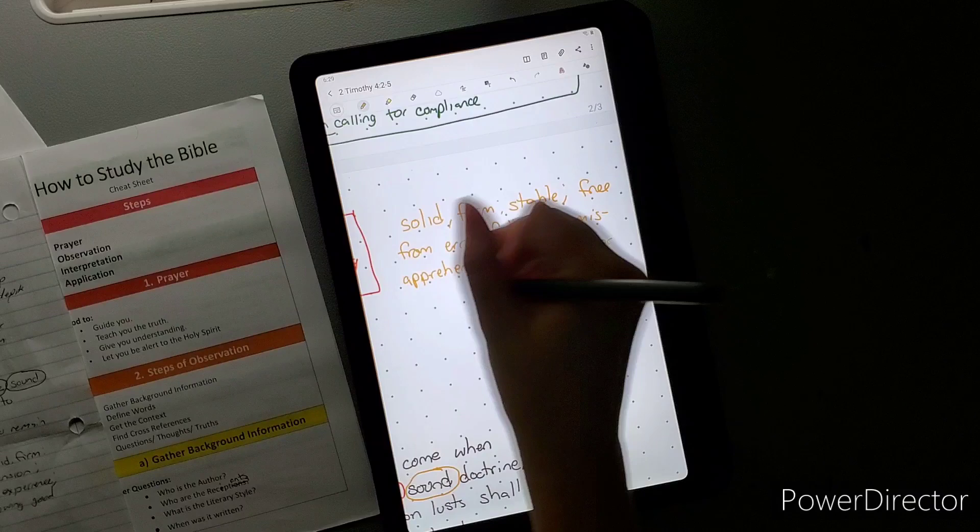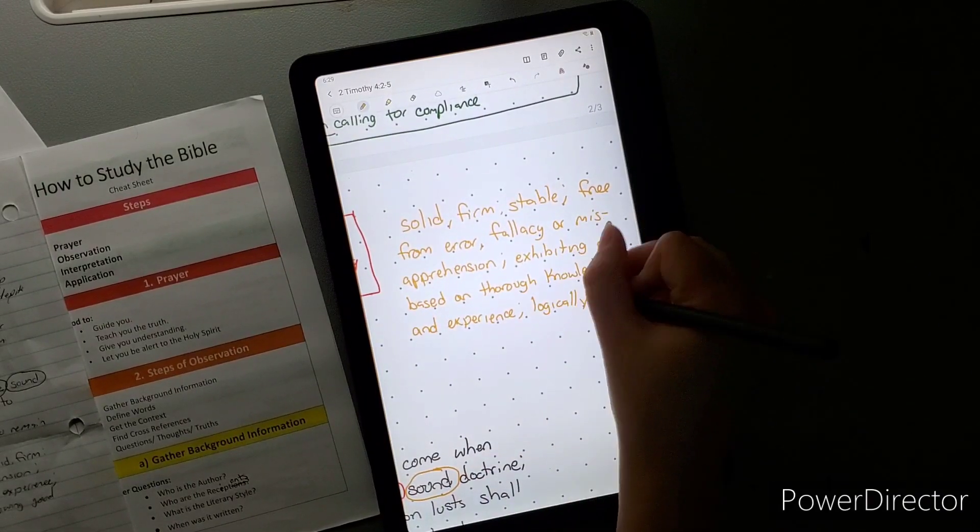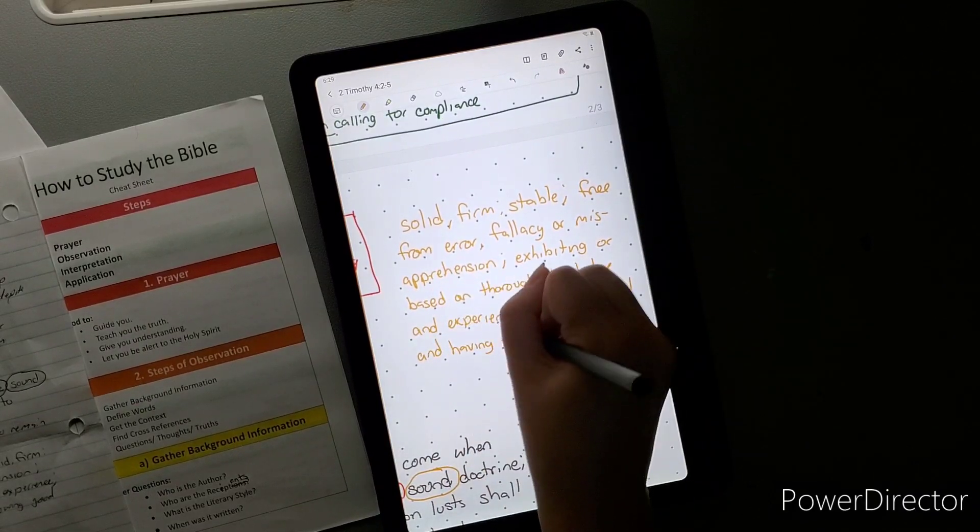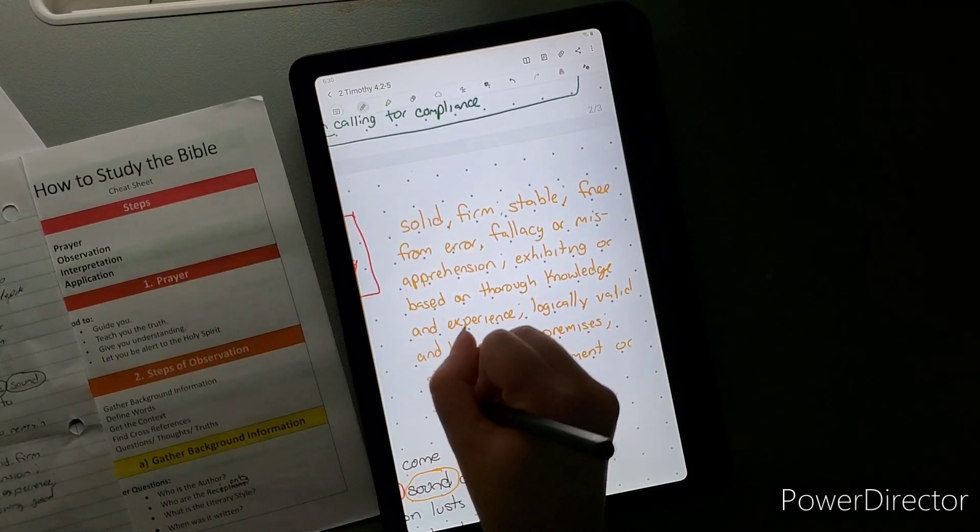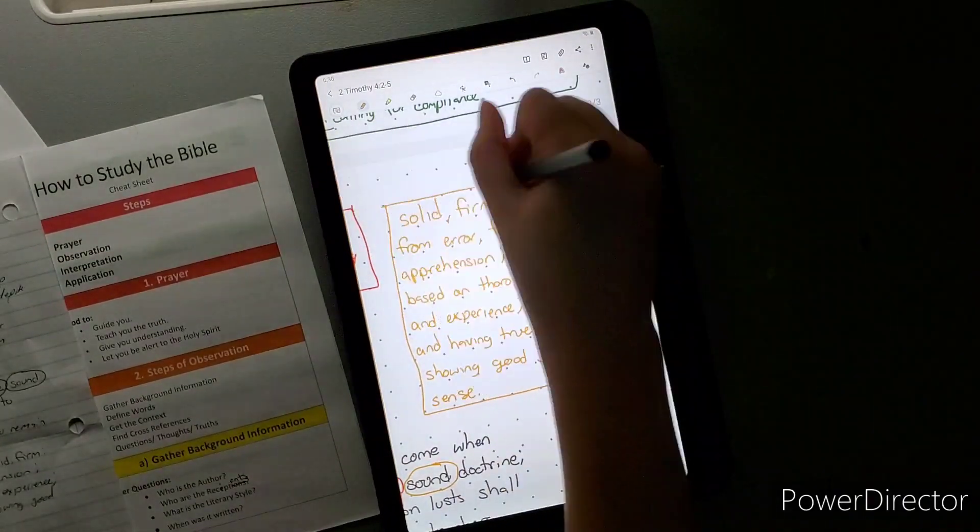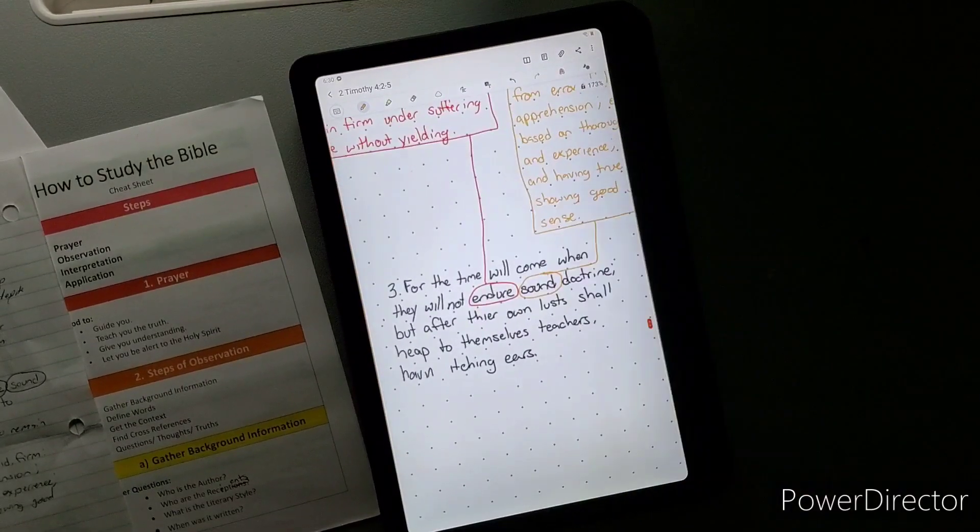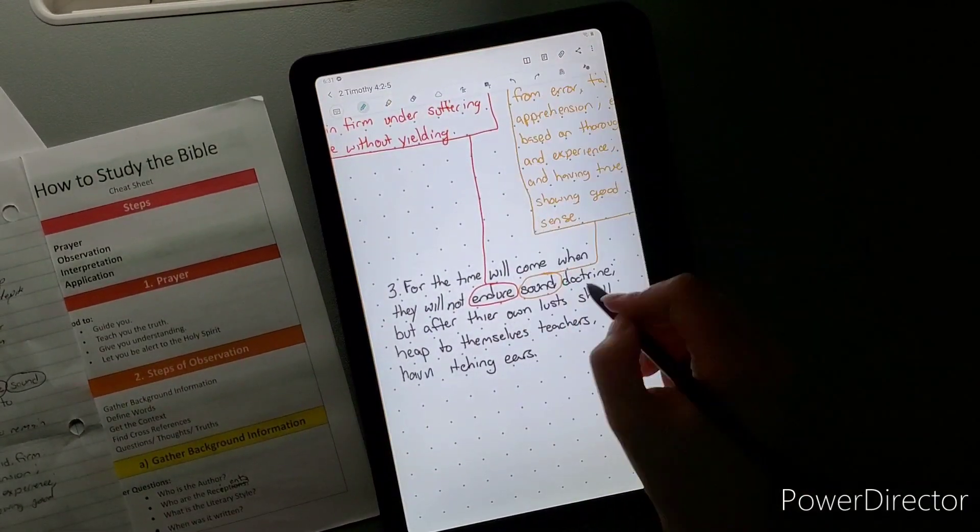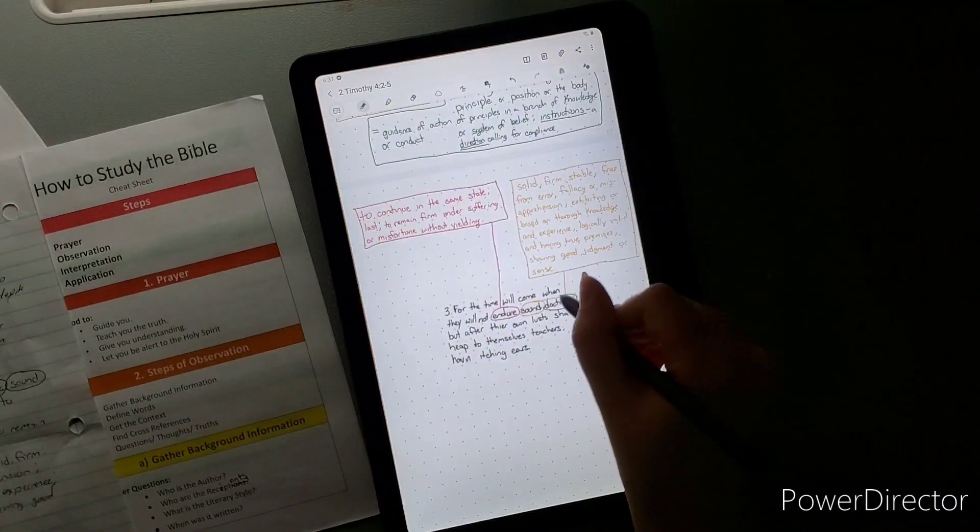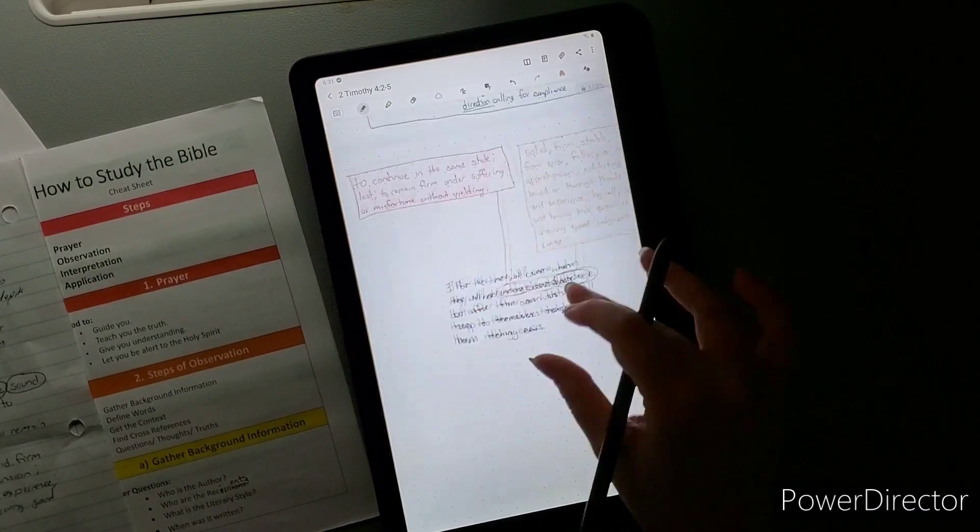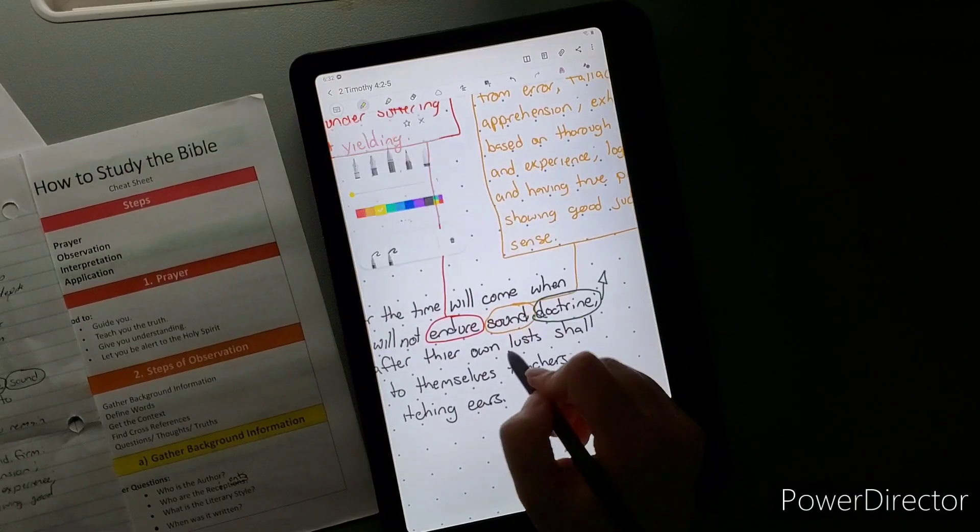Because of their own lusts and pleasure and desires that they want, they're going to in a large quantity give themselves to teachers having itching ears. They are giving themselves to, so itching is to have a restless desire or hankering for something. And ears is a sense or act of hearing. They want to hear things that go with what they want, go with what their pleasures are, which are normally sin.